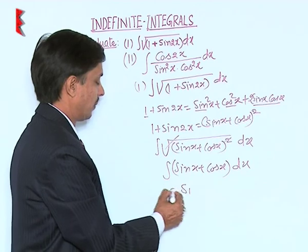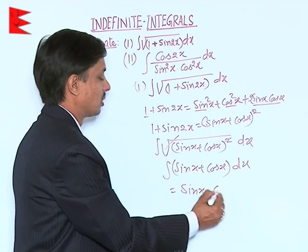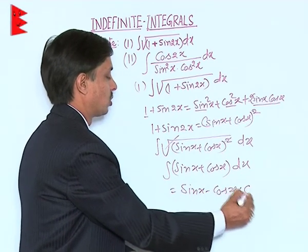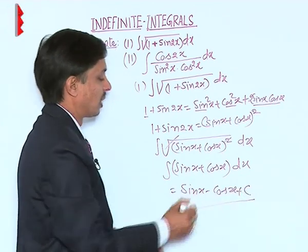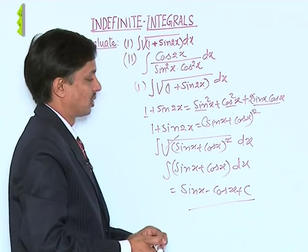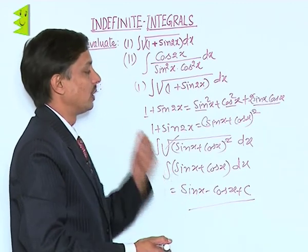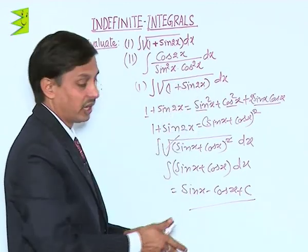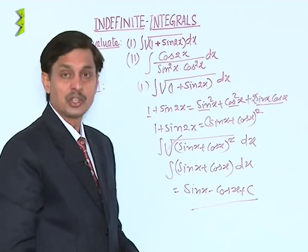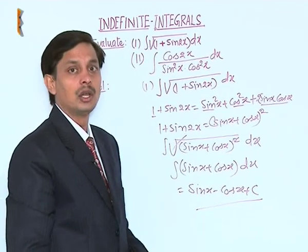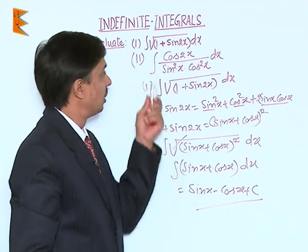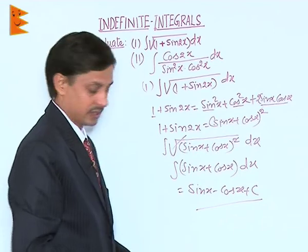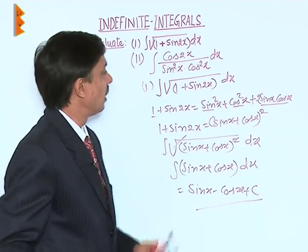We know the integration of sin x is minus cos x and the integration of cos x is sin x. So the result is equal to sin x minus cos x plus integrating constant c. This is how we evaluate the integration of root of 1 plus sin 2x dx.